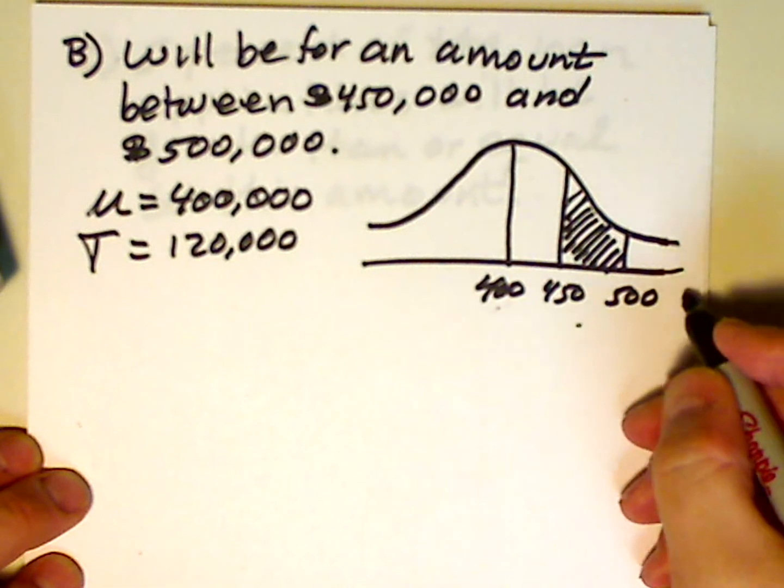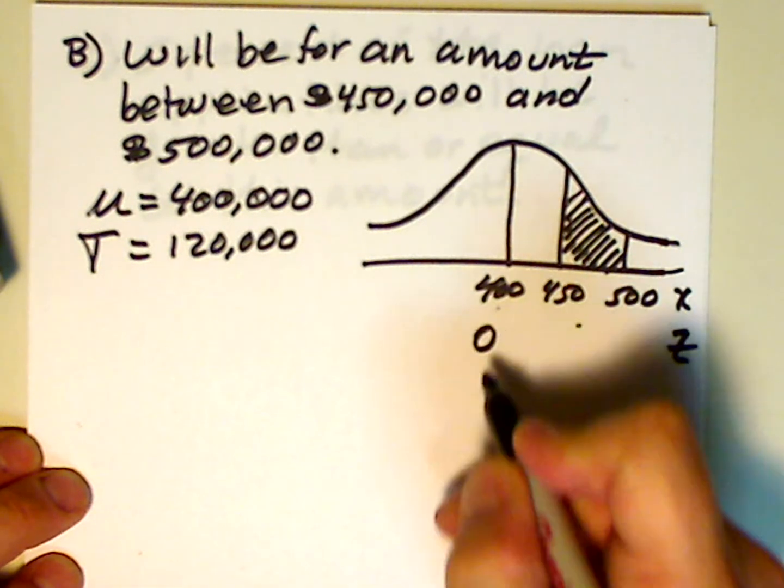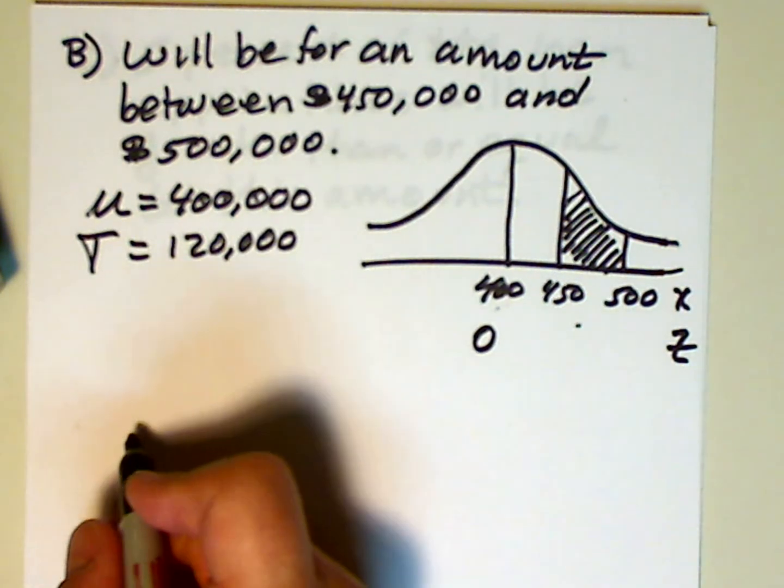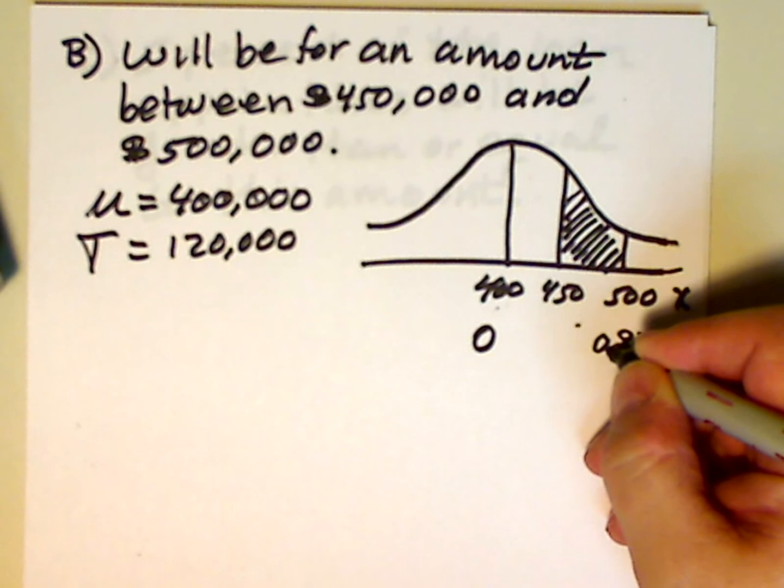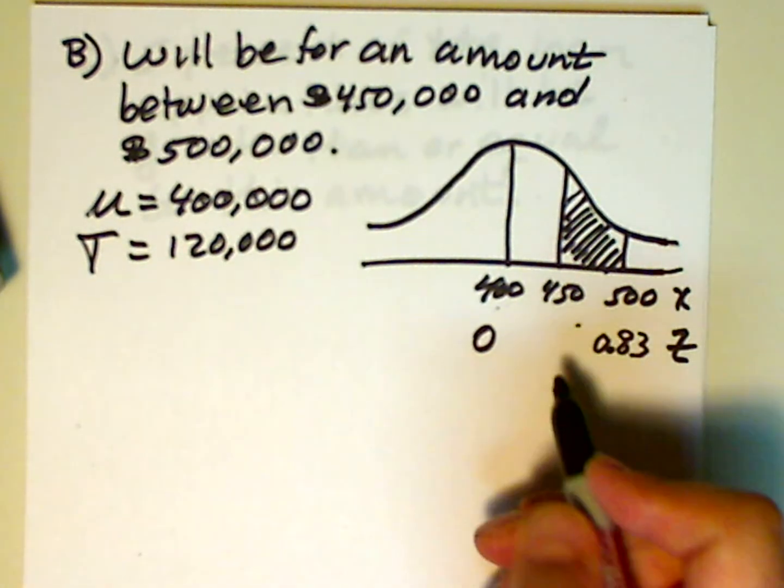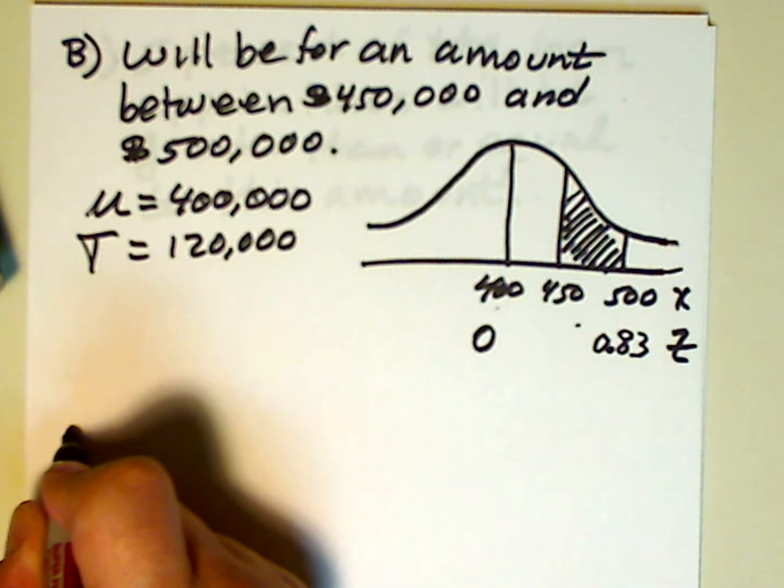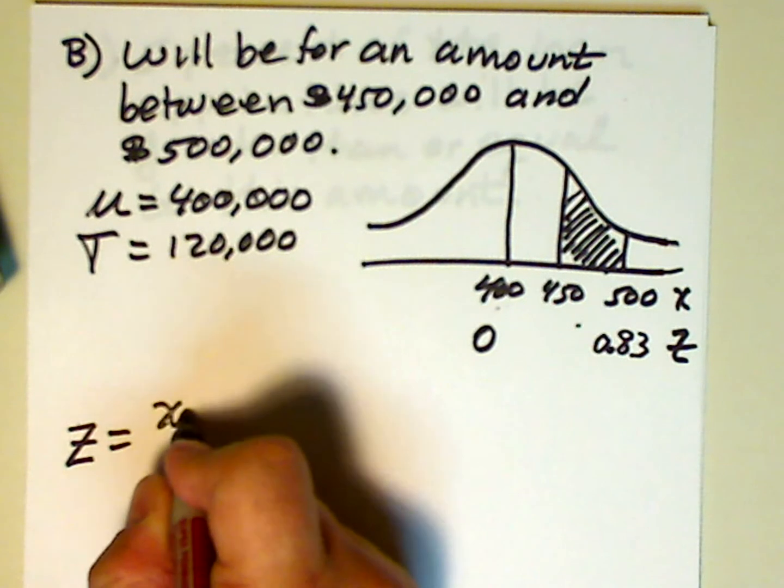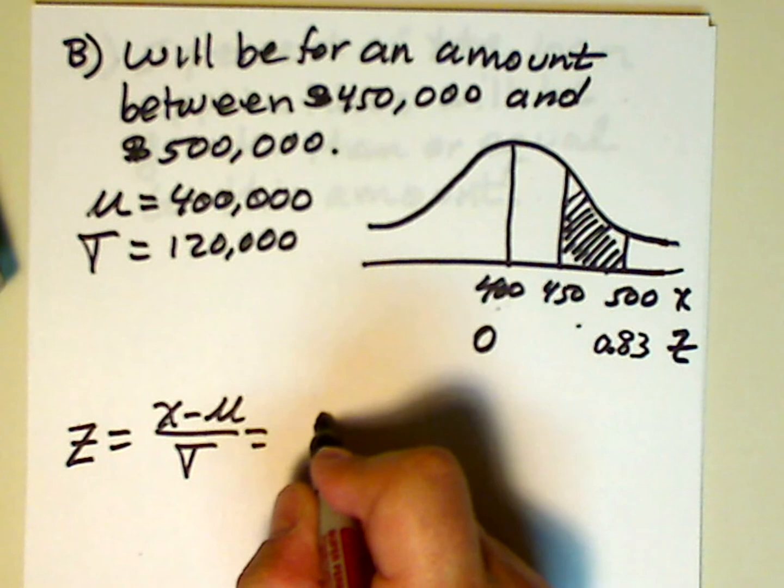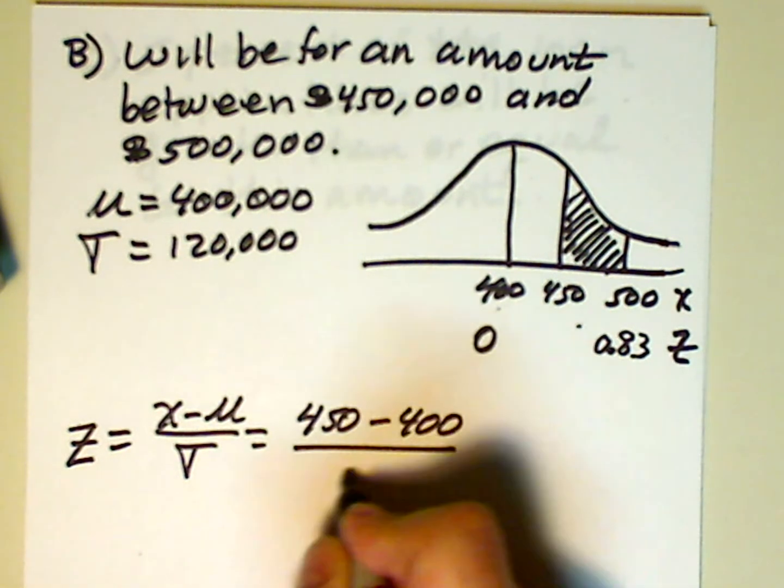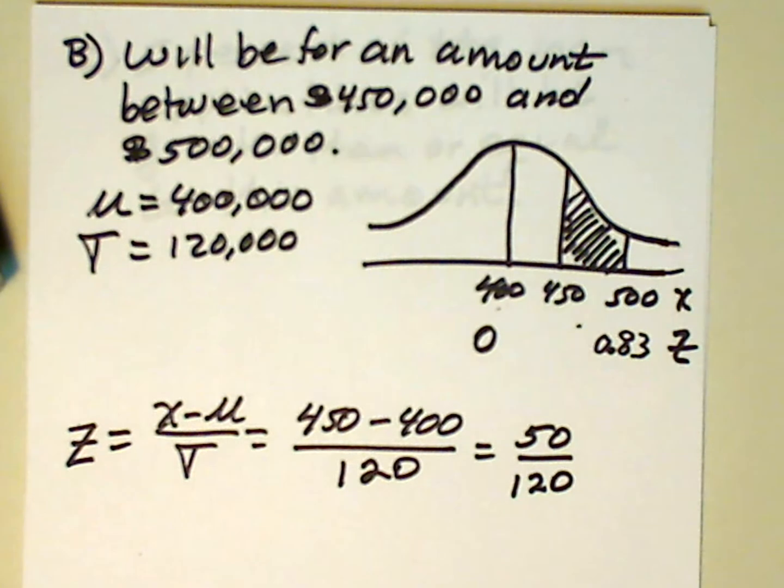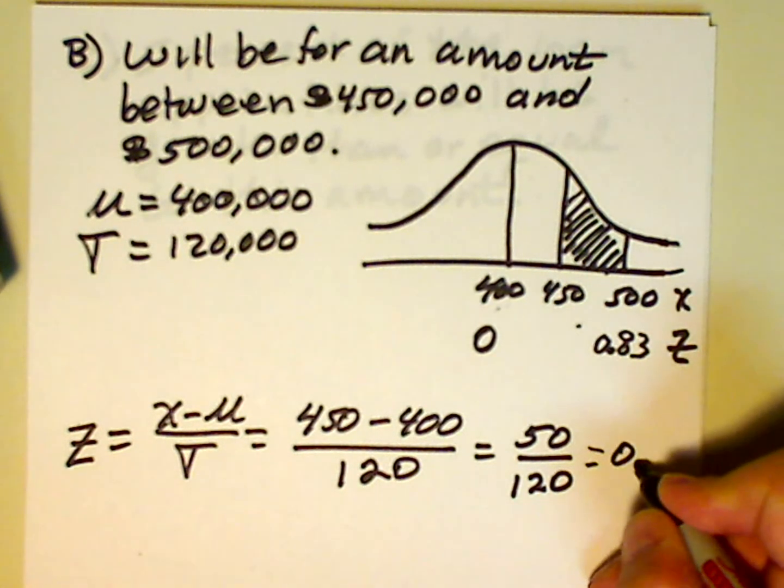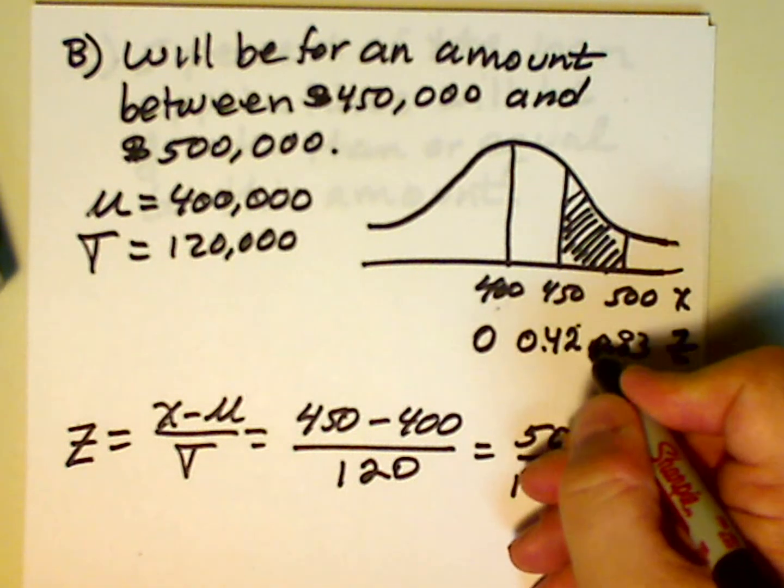We're going to make another transformation to the Z distribution. So the mean is 0. So we already know that the Z value associated with 500 is 0.83. So now we need to find a Z value associated with 450,000. Let's do that now. Z = (x - μ) / σ. And that's (450 - 400) / 120 = 50 / 120. And I believe that if you work out that division, it'll come to 0.42.